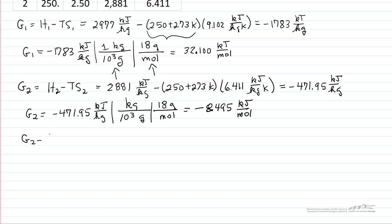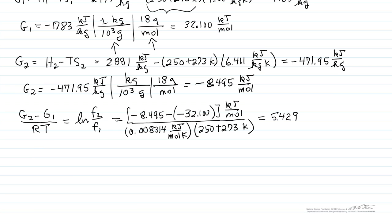G2 minus G1, and I'm going to take the equation we had earlier and just slightly rearrange it. So log fugacity 2 over fugacity 1, and now I'm going to substitute in the numbers. So I've used the gas constant in appropriate units so that the equation now is dimensionless since log of fugacity 2 over fugacity 1 should be dimensionless.